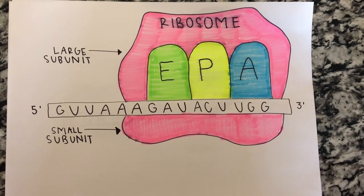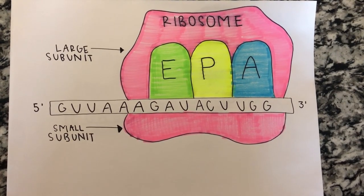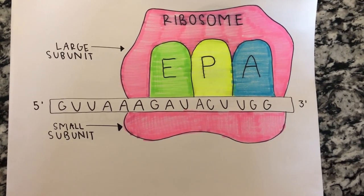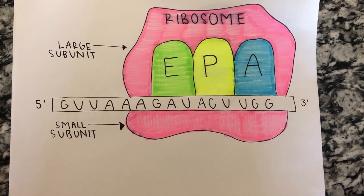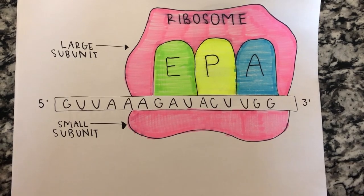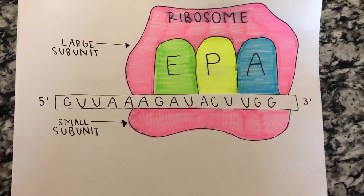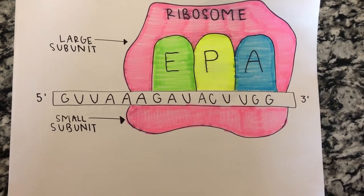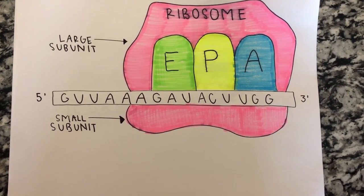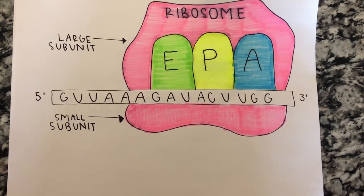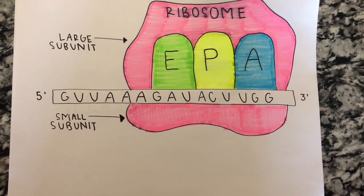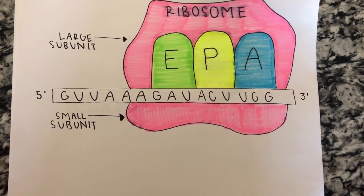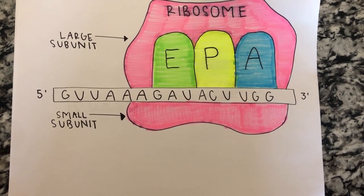Ribosomes are the site where translation takes place. Ribosomes have a small and large subunit. They are composed of RNA and proteins. It binds to the 5' end of mRNA and they have an E, P, and A site.